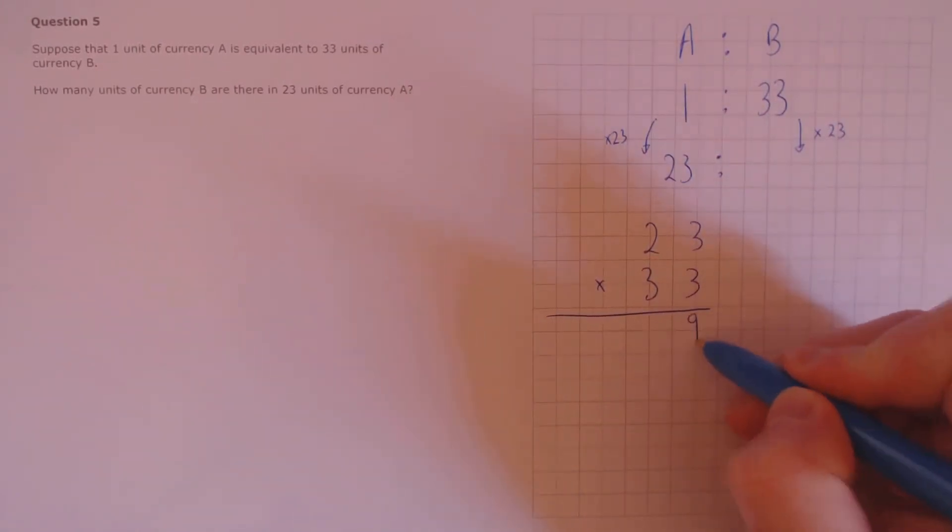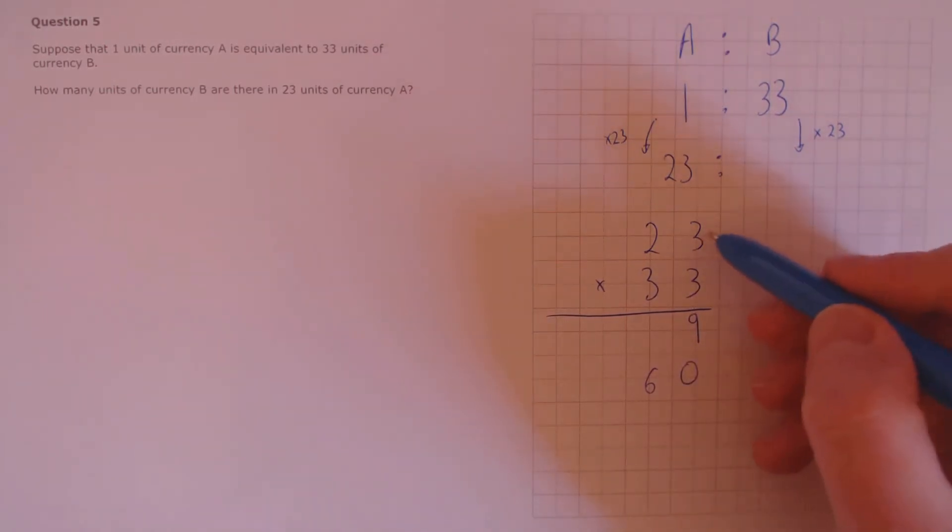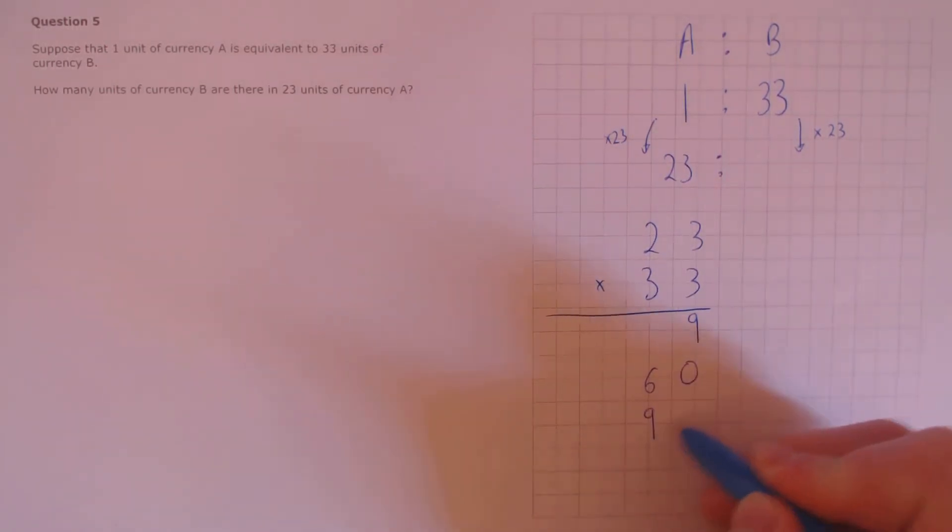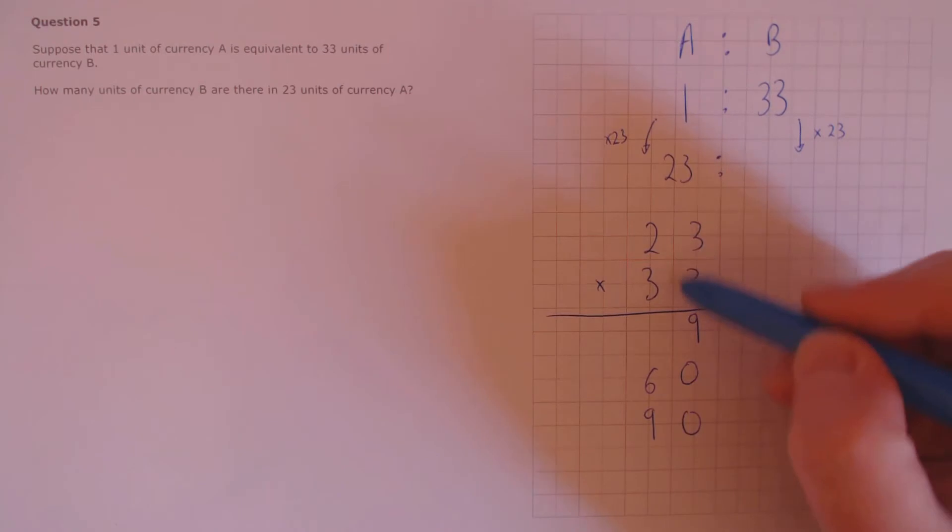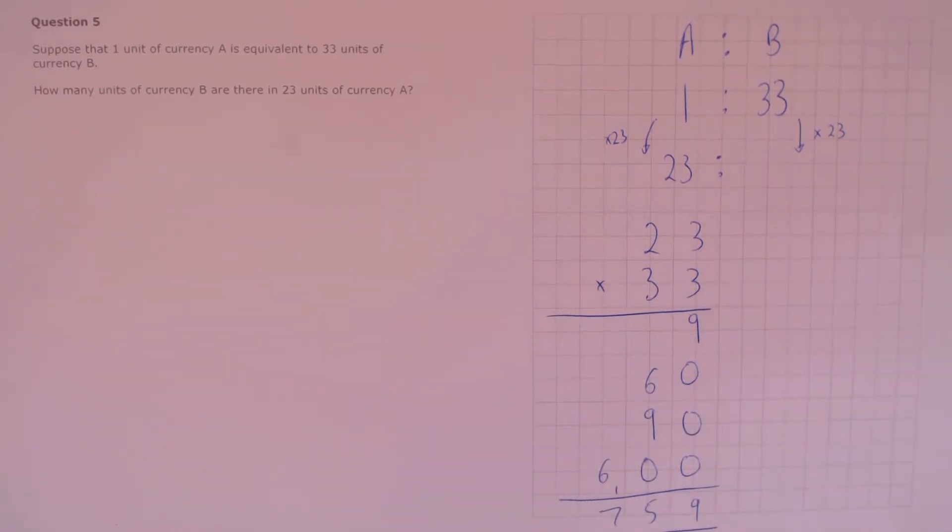So 23 times 33. 3 times 3, that's 9. 20 times 3, that's 60. 3 times 30, that's 90. And 20 times 30, that would be 600. Let's add all those up. 9, 15, one to carry over, 6 and 1, 759.